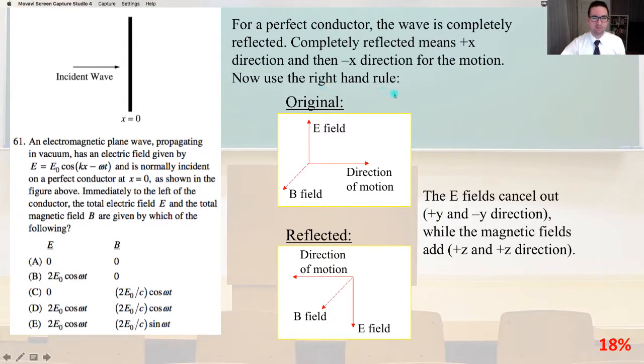For a perfect conductor, the wave is completely reflected. Completely reflected means positive x direction and then minus x direction for the motion. Now use the right hand rule. The original E field cancels out the positive y and minus y direction while the magnetic fields add the positive z and positive z direction. So we would need a zero E field and a positive non-zero B field and that is answer C.